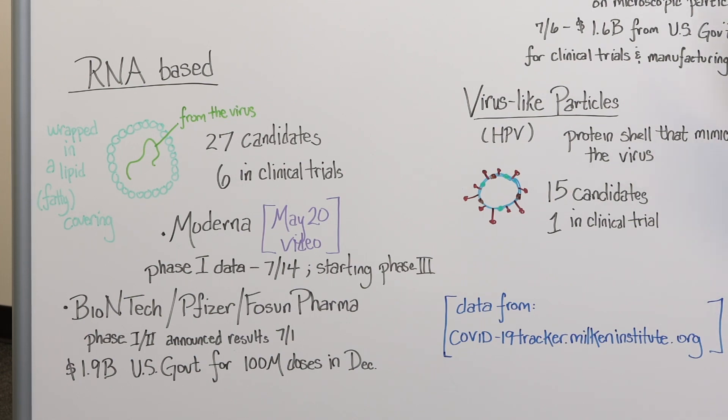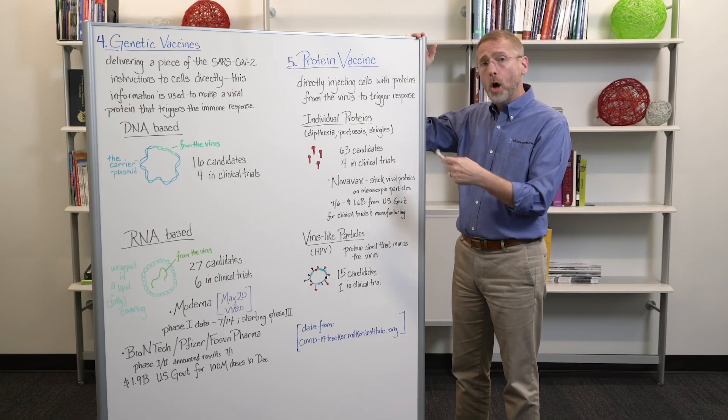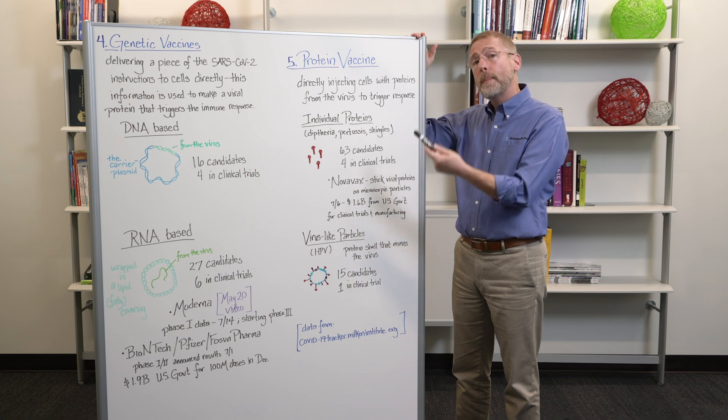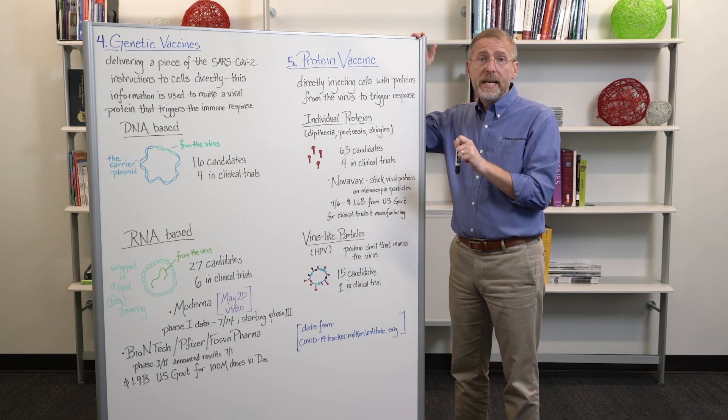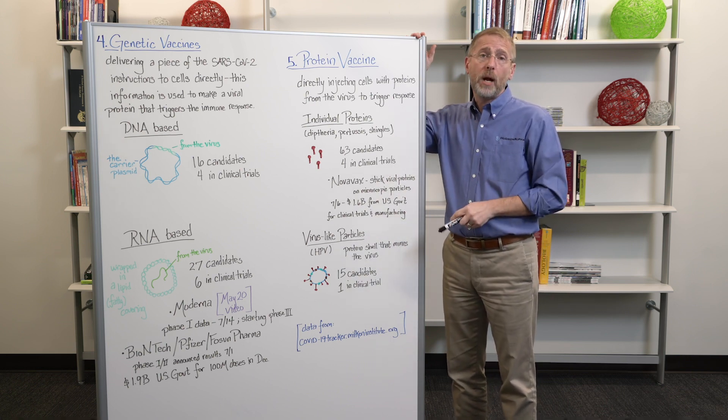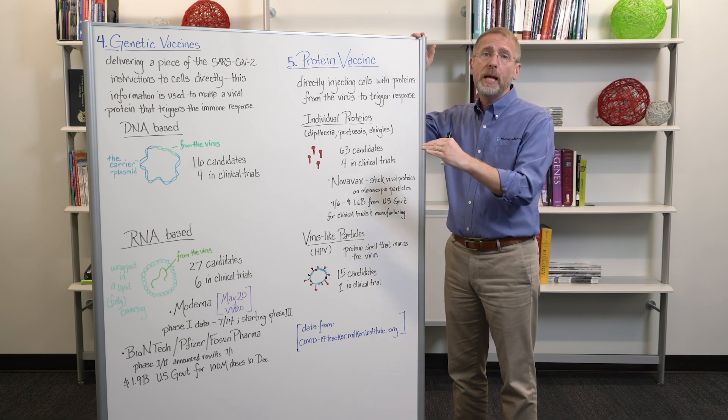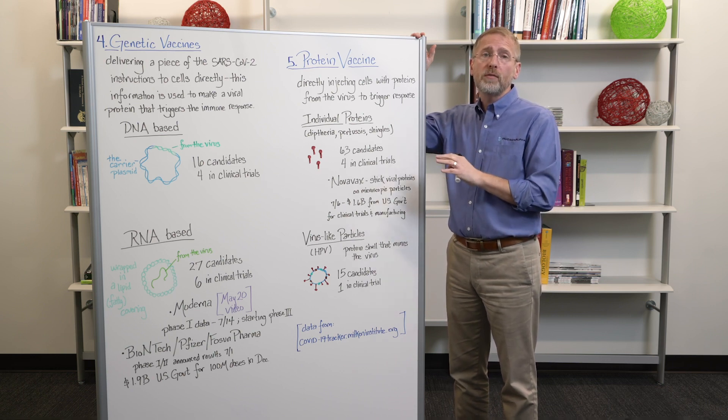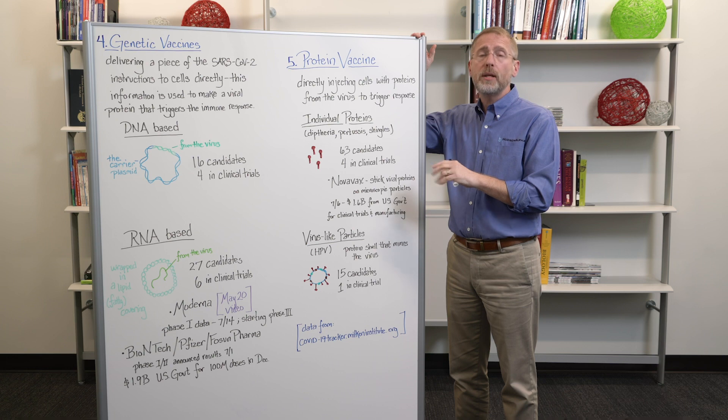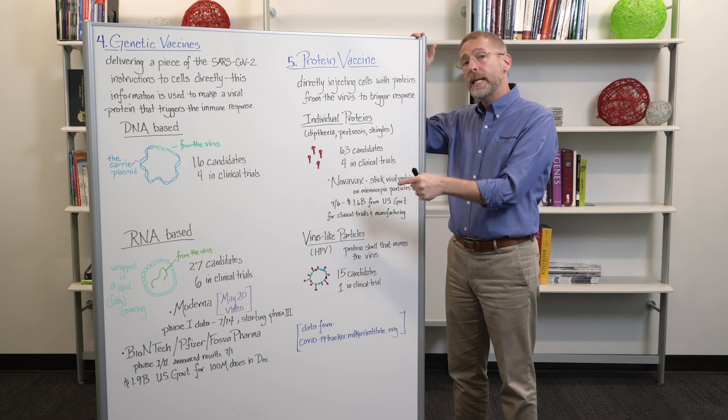27 candidates in the RNA based and six in clinical trials, including one that you've probably heard a lot about. That's the Moderna messenger RNA or mRNA candidate. That vaccine has gone through phase one, has wrapped up phase two and this week started phase three clinical trials. That's 30,000 individuals that will be enrolled as volunteers across the United States to look at this phase three candidate.